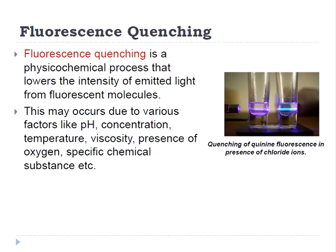Quenching refers to any process which decreases the fluorescence intensity of a given sample. Fluorescence quenching is a physico-chemical process that lowers the intensity of the emitted light from fluorescent molecules. A variety of processes can result in quenching, such as excited state reactions, energy transfer, complex formation, and collisional quenching. Various parameters such as changes in pH, concentration, temperature, and viscosity can also affect this process.